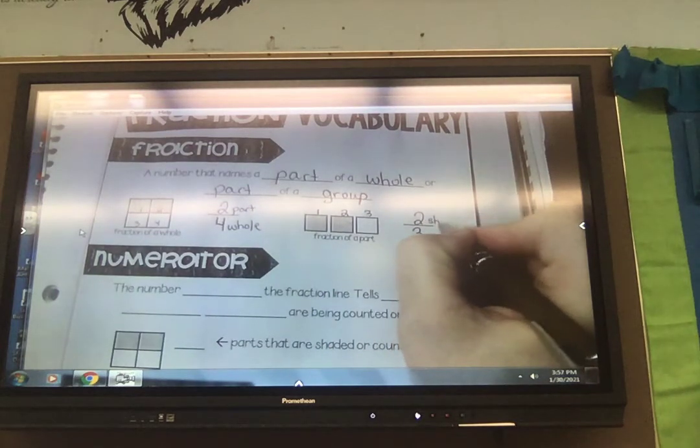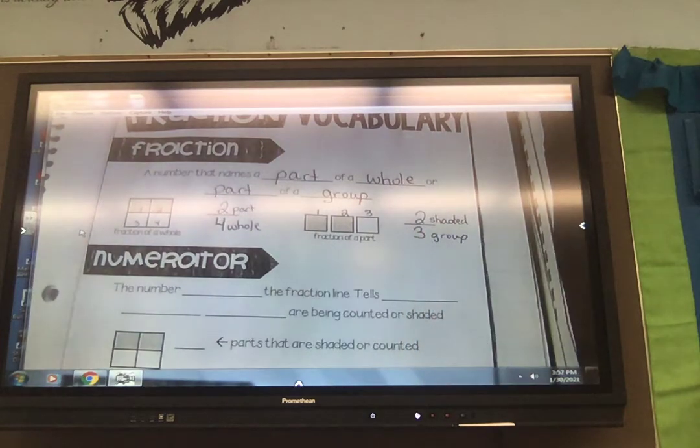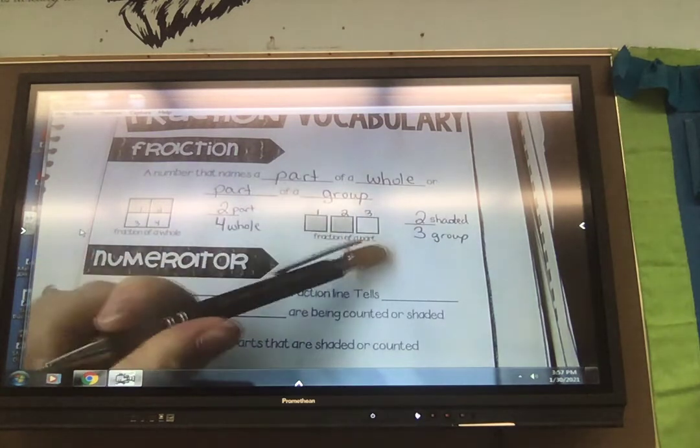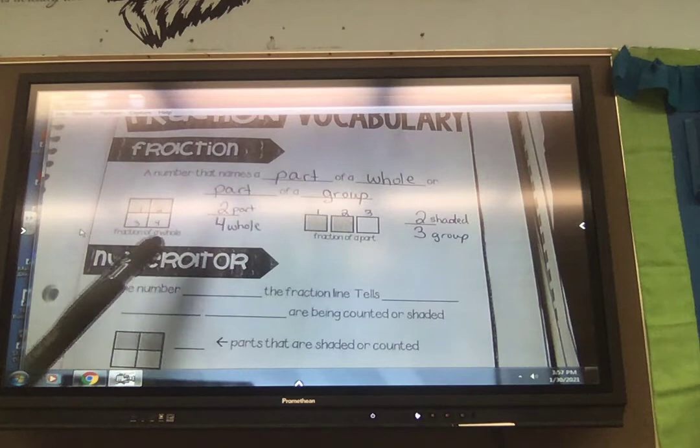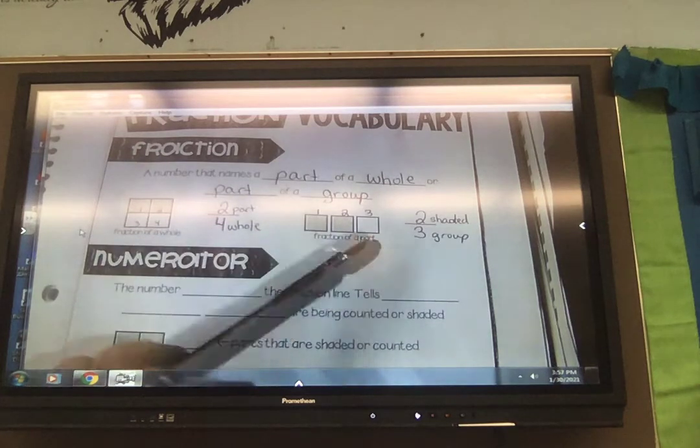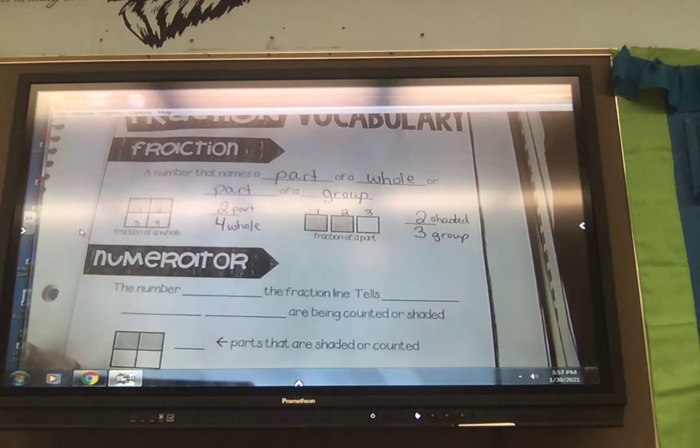So again, that number is going on top. My total number is going on the bottom. So I could say two-thirds of this group is shaded. So you see an example of part of a whole and part of a group.